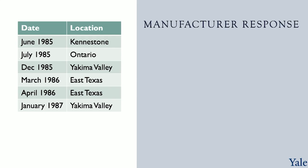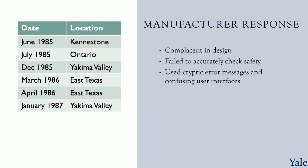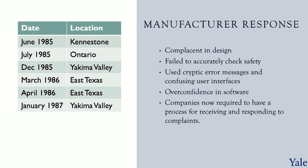We can learn a lot from the failures of the manufacturer to respond to complaints. They were complacent in design and failed to accurately check safety, assuming that since prior versions were safe, the new version was safe as well. They used cryptic error messages and confusing user interfaces. They were overconfident in their software, failing to conduct adequate investigations following hospital incidents. These failures led to severe injury and death for several individuals. Because of these incidents, companies are now required to have a process for receiving and responding to complaints.